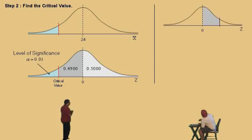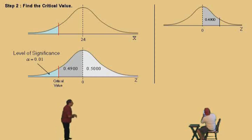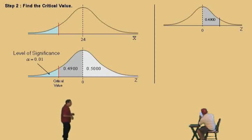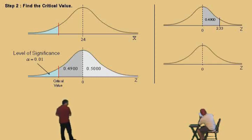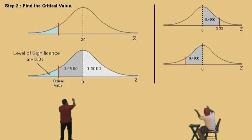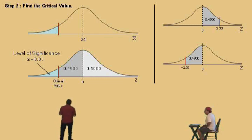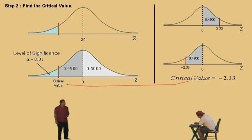So we look up 0.4900 in the Z table — remember, the Z table only reads to the right of zero for this class. Look at the area closest to 0.4900 and find the Z value. That comes out to 2.33. Now, our critical value is to the left of zero, so it's a negative value. By symmetry, when the area is 0.4900 on the left side of zero, the Z value is negative 2.33. That is our critical value. That completes step two.